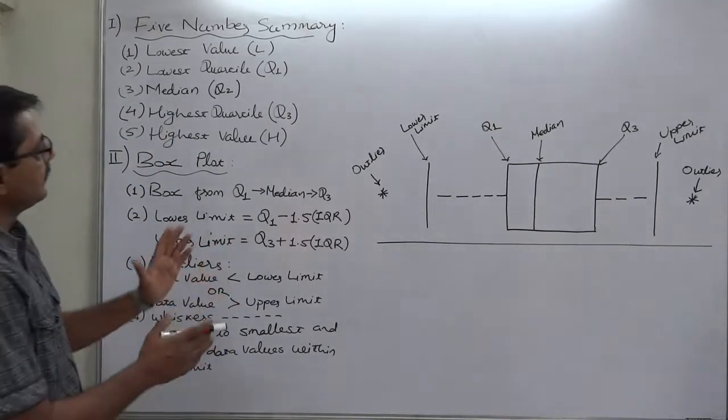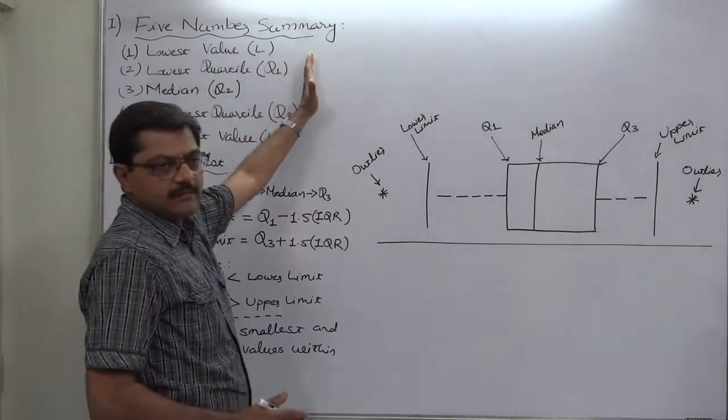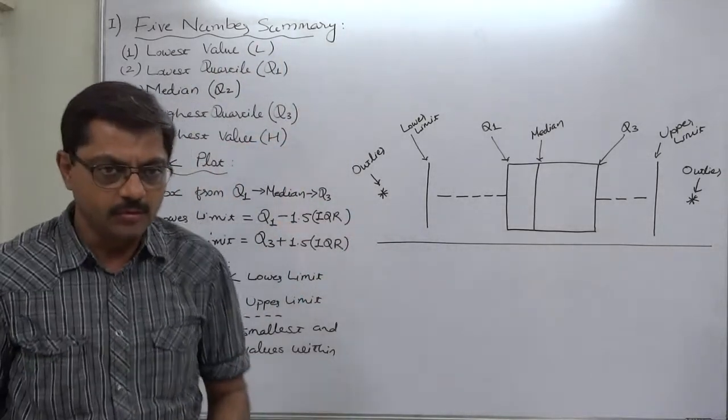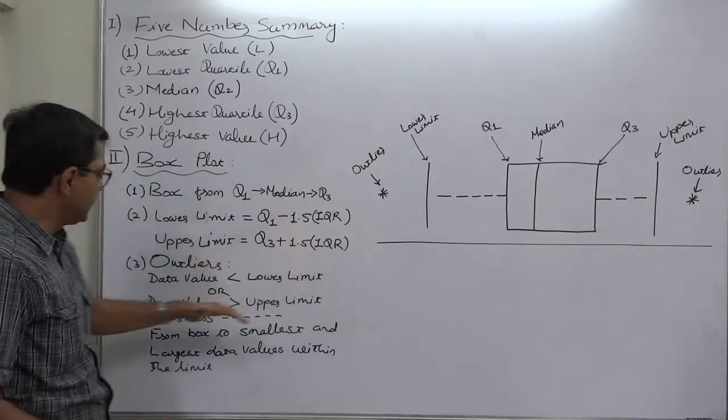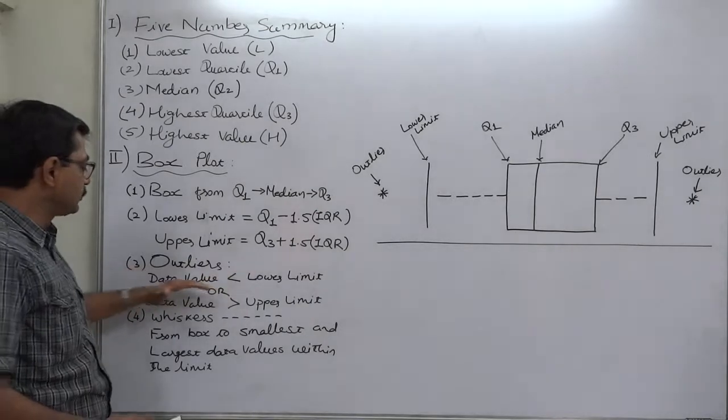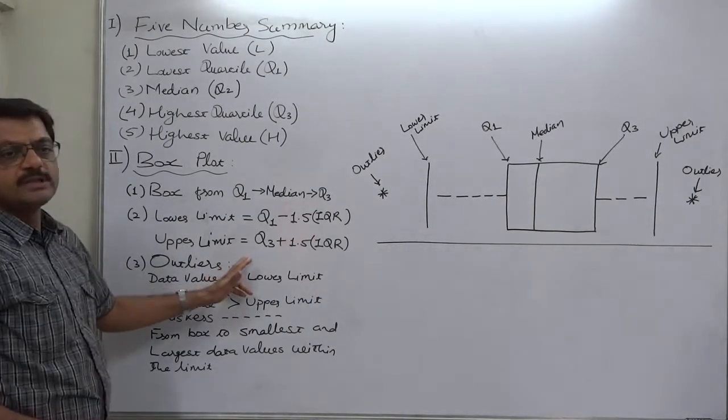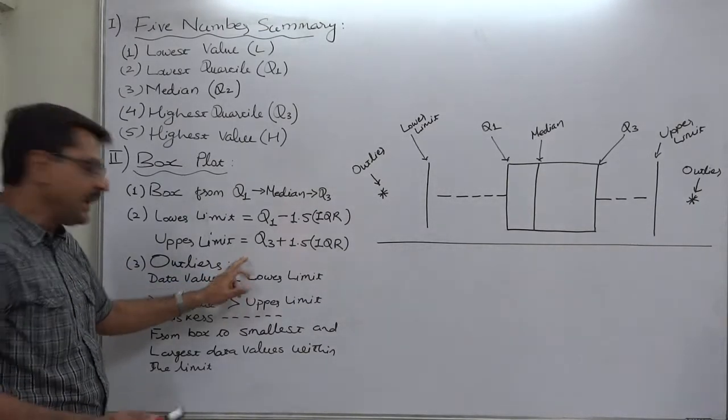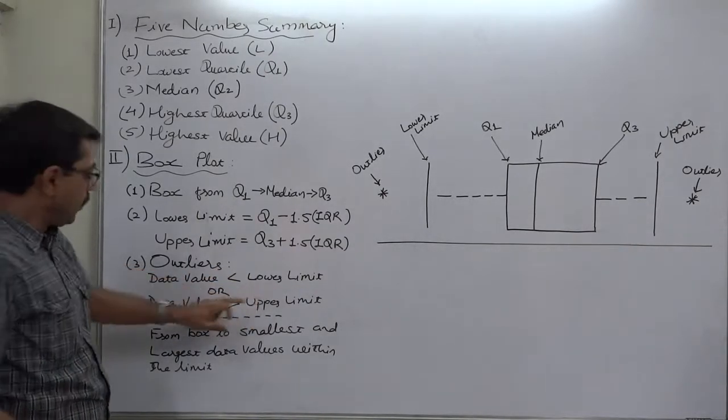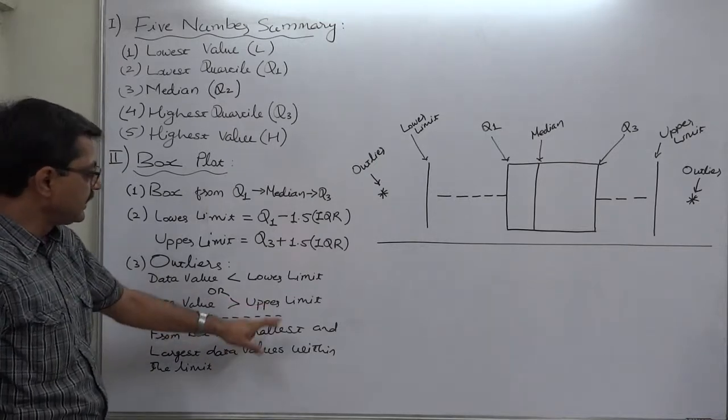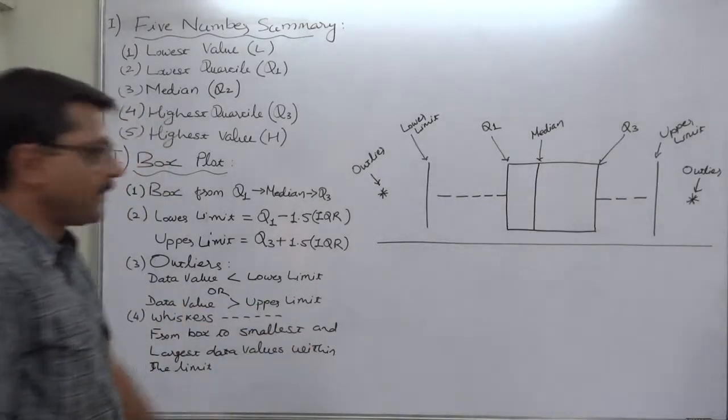After calculating lower limit and upper limit, we have to refer the data which we have already arranged in the ascending order. And from this data arranged in ascending order, we can easily mark the values or data values which are outliers. Again, outlier means the data value which is lower than lower limit or the data value which is greater than or more than upper limit.